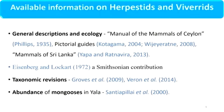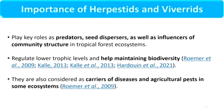When it comes to available information, general descriptions and ecology are available starting from the early 1900s, along with some taxonomic revisions, abundance studies in Yala, and some studies in Udawalawe as well. However, they are important because they play key roles as predators, seed dispersers, and influencers of community structure, helping regulate and maintain biodiversity. They are also sometimes considered carriers of diseases as well as agricultural pests.